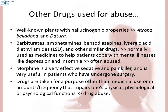Other well-known plants with hallucinogenic properties are Atropa belladonna and Datura. Drugs like barbiturates, amphetamines, benzodiazepines, LSD (lysergic acid diethylamide), and other similar drugs that are normally used as medicines to help patients cope with mental illness like depression and insomnia are often abused. Morphine is a very effective sedative and pain killer and is very useful in patients who have undergone surgery. Several plants, fruits and seeds having hallucinogenic properties have been used for hundreds of years in folk medicine and religious ceremonies. When these are taken for a purpose other than medicinal use, or in amounts or frequency that impairs one's physical, physiological, or psychological functions, it constitutes drug abuse.